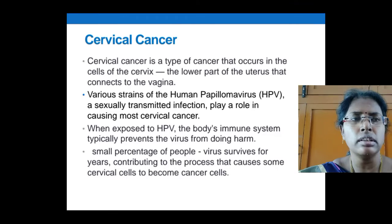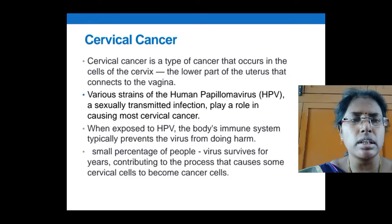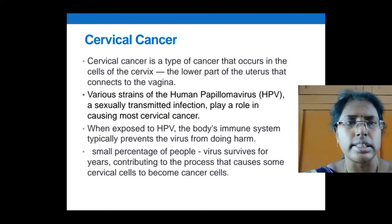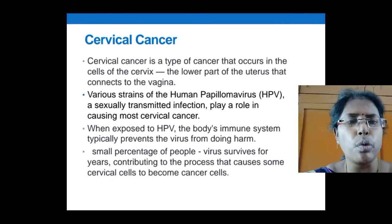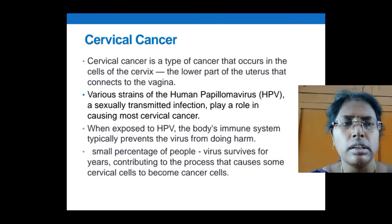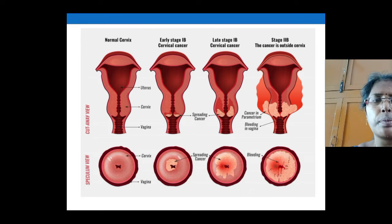The next condition is cervical cancer. It is a type of cancer that occurs in the cells of the cervix, which is the lower part of the uterus that connects to the vagina. Various strains of human papillomavirus (HPV), a sexually transmitted virus, play a major role in causing cervical cancer. When a woman is exposed to HPV, the body's immune system typically prevents the virus from causing harm. Only a small percentage of people, after many years, develop cervical cell changes that become cancerous. This picture shows the growth of cervical cancer stage by stage.